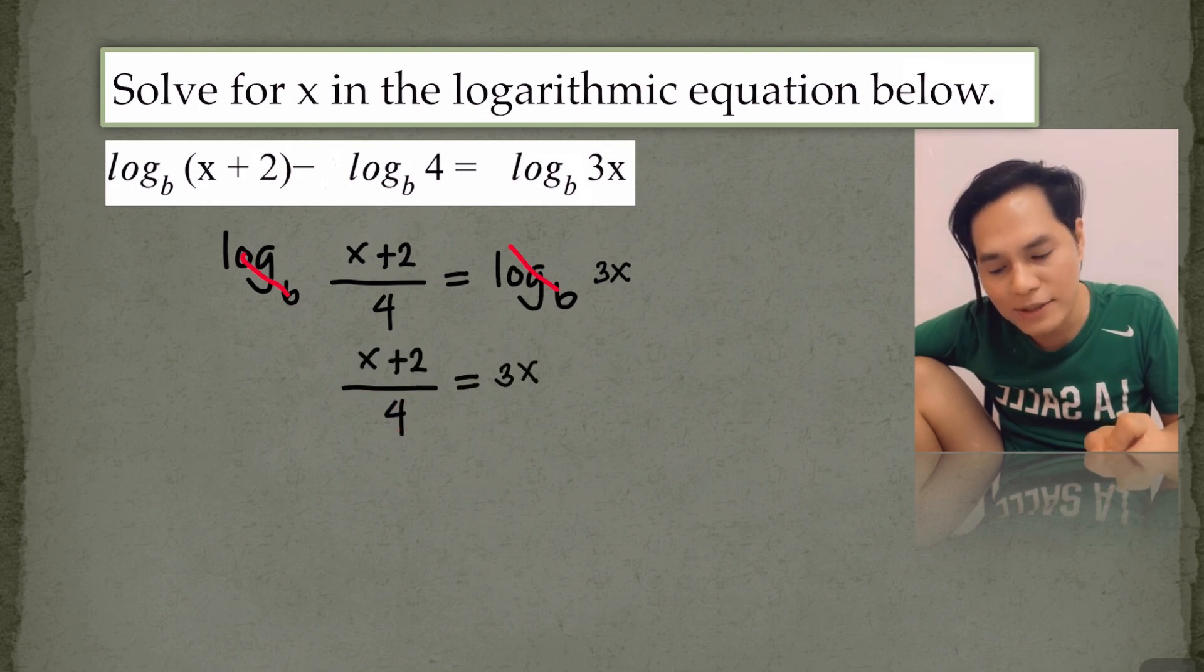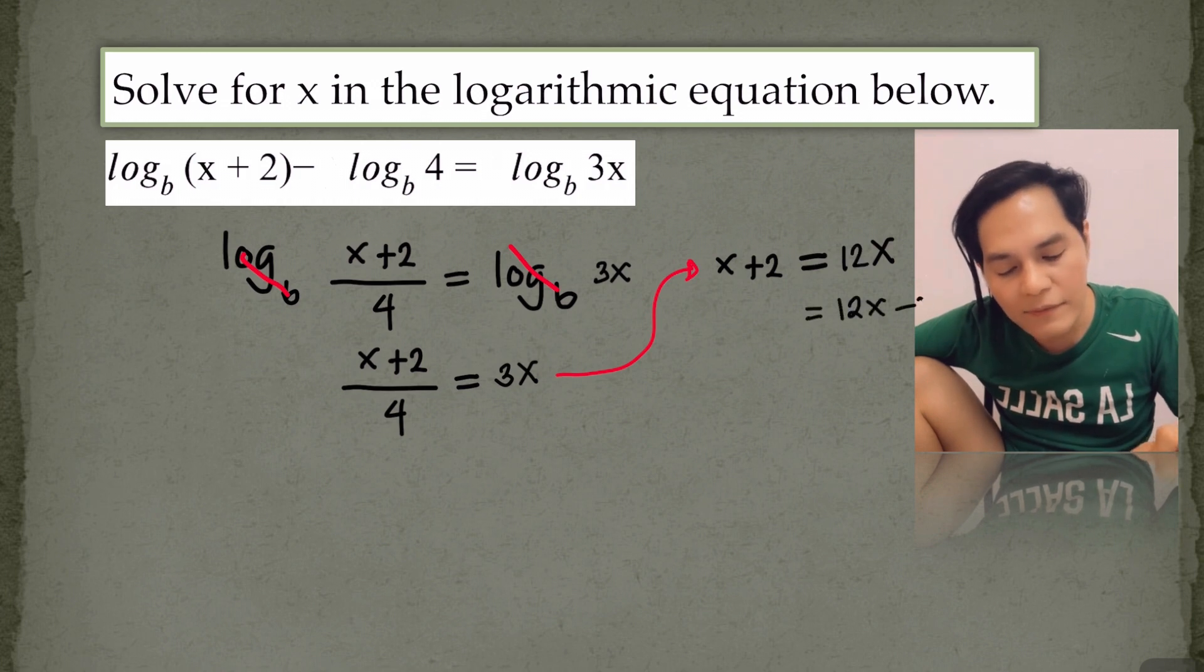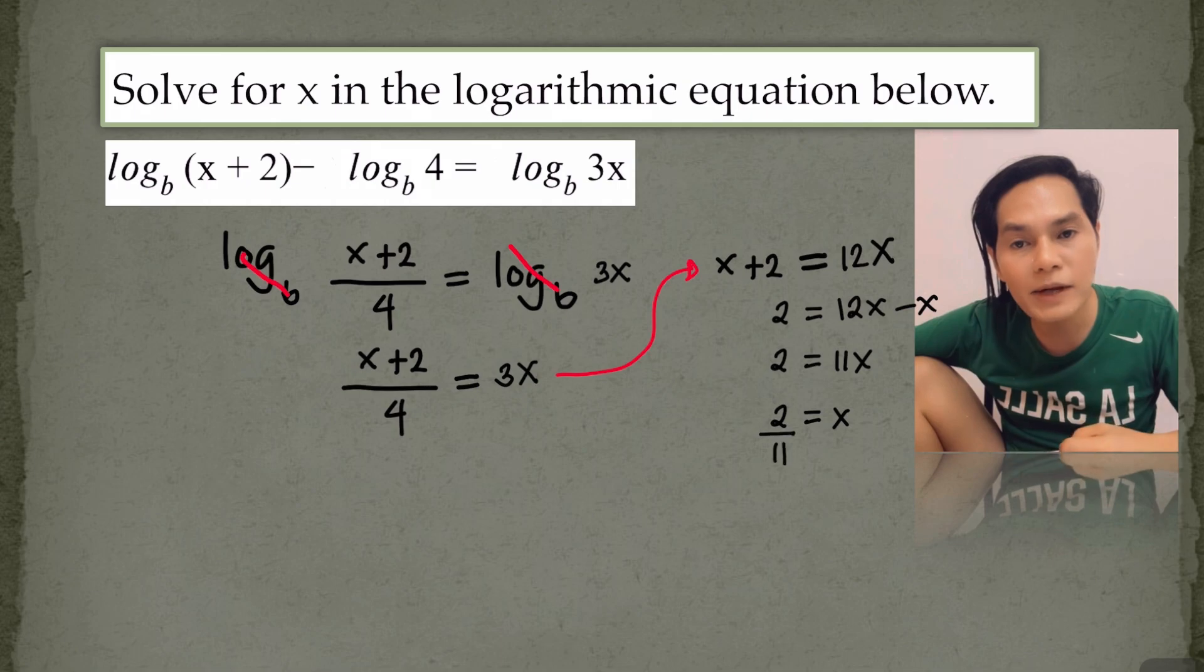And the remaining expression in both sides of the equation, we have here x plus 2 over 4 is equal to 3x over 4x. So simply cross-multiply. We have here x plus 2 is equal to 12x. Then transfer x on the other side of the equation. We have 11x is equal to 2. Divide both sides by 11. The value of x is 2 over 11.